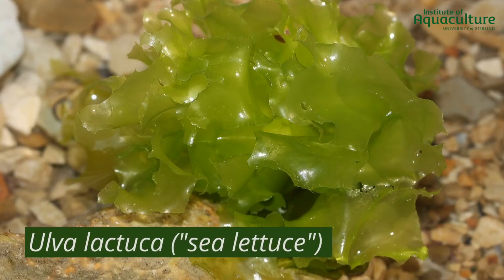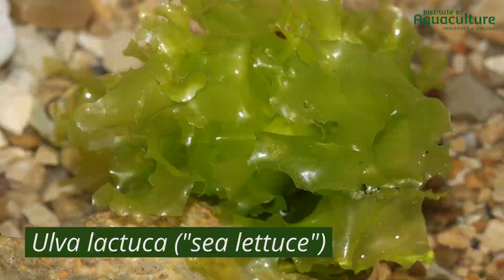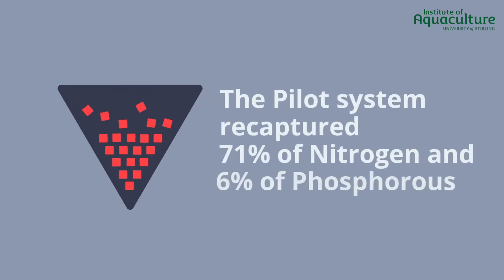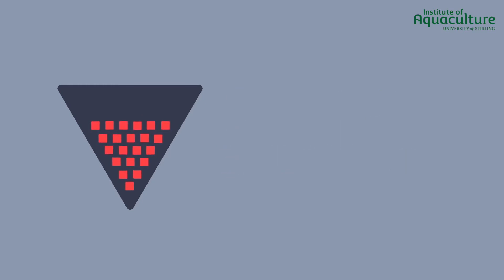The algae species chosen is known by the common name sea lettuce. According to the results of the pilot system, a theoretical full-size aquaponics system would successfully manage to recapture up to 71% of the dissolved nitrogen and up to 6% of the dissolved phosphorus deriving from smolt production wastewater.